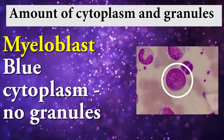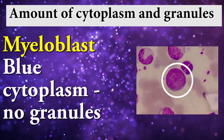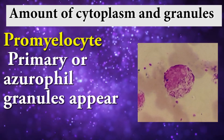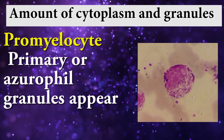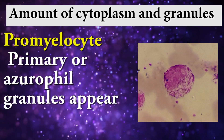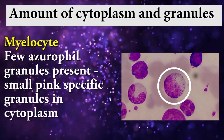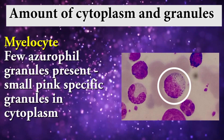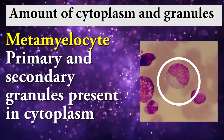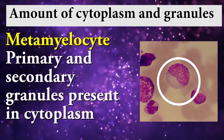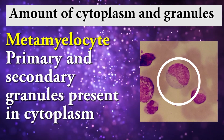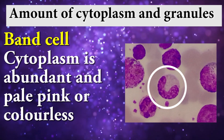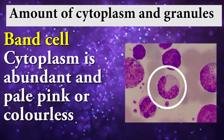Fifth one is amount of cytoplasm and granules. Myeloblast: blue cytoplasm, no granules. Promyelocyte: primary azurophilic granules appear. Myelocyte: few azurophilic granules present, small pink specific granules in cytoplasm. Metamyelocyte: primary and secondary granules present in cytoplasm. Band cell: cytoplasm is abundant and pale pink or colorless.